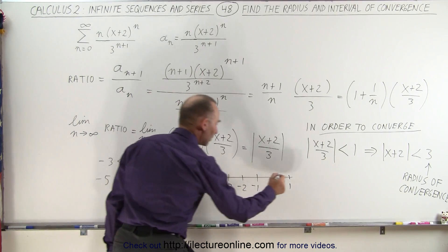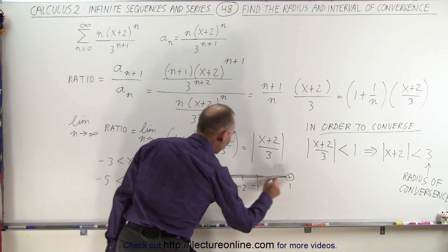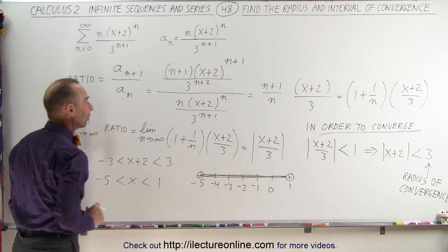If I draw a little circle around here and a little circle around there, that means any number between a positive 1 and -5 for the value of x allows this infinite series to converge.